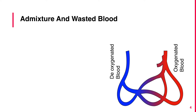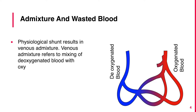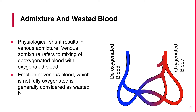Physiological Shunt results in venous admixture. Venous admixture refers to the mixing of deoxygenated blood with oxygenated blood. The fraction of venous blood which is not fully oxygenated is generally considered as wasted blood.